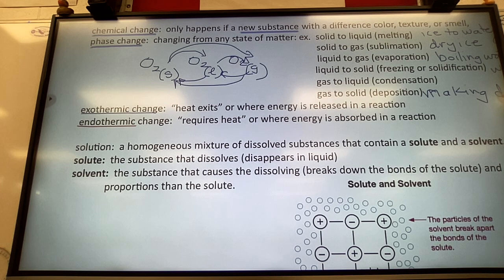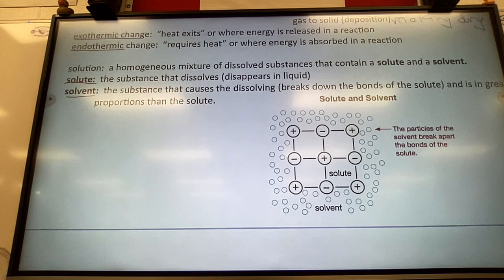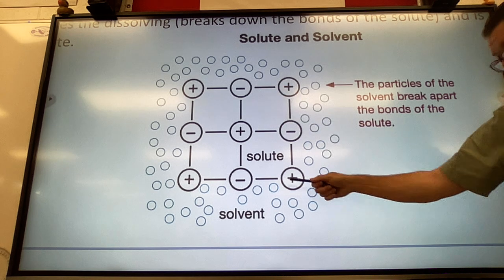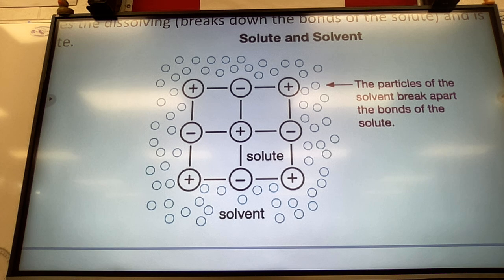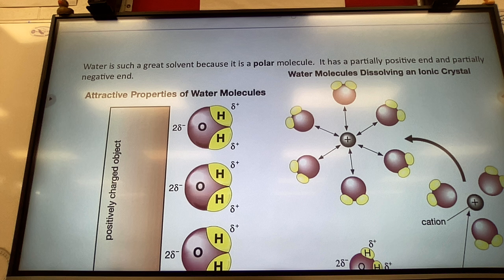We're headed into making solutions — dissolving a compound in typically water. Know the difference between solute and solvent. The solute is the substance that dissolves — like salt or sugar, it's what disappears. The solvent is the substance that causes the dissolving, typically water. Water will actually break the ionic bonds of a solute and dissolve it.